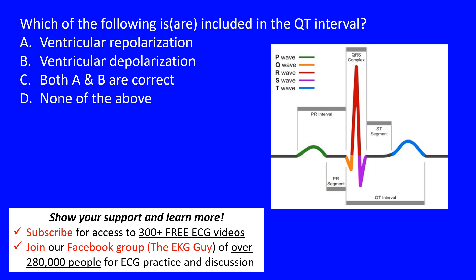First, we need to know the portions of the cardiac complex and what they represent. Here is our P wave, which represents atrial depolarization. Then we have our PR segment — the PR segment and the P wave together make up the PR interval. Repolarization of the atria follows the P wave and occurs in this region here.